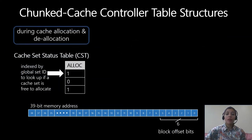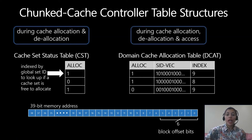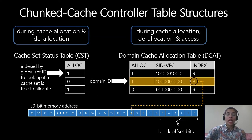To support these cache management operations, additional table structures are required and are the most significant contributor to chunked cache's hardware overhead. A cache set status table stores whether every global cache set is allocated or free. Another table tracks chunks allocated to domains. The domain cache allocation table stores the vector of global set IDs allocated to each domain along with the number of index bits used to map its memory lines to the corresponding set.